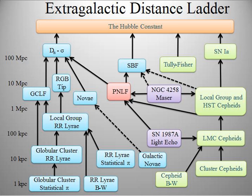Light echoes can also be used as standard rulers, although it is challenging to correctly measure the source geometry. With few exceptions, distances based on direct measurements are available only out to about a thousand parsecs, which is a modest portion of our own galaxy. For distances beyond that, measures depend upon physical assumptions—the assertion that one recognizes the object in question, and that the class of objects is homogeneous enough that its members can be used for meaningful estimation of distance.